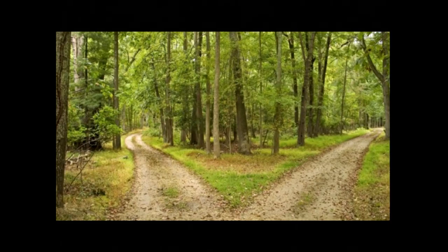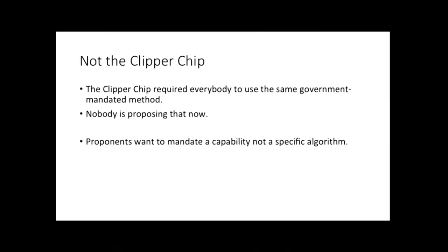Encrypted storage, of course, is a different scenario with a different Alice and Bob diagram. So where are we going to go on this issue? We honestly don't know yet, and I don't want to get ahead of the policy process. But two things have emerged pretty clearly from the public discussion. First: nobody wants to do the Clipper Chip again. Nobody is proposing a requirement that everyone use the same specific algorithm or government-mandated technical approach. Those who support a mandate would mandate a capability and leave implementers some freedom to decide how to achieve it.